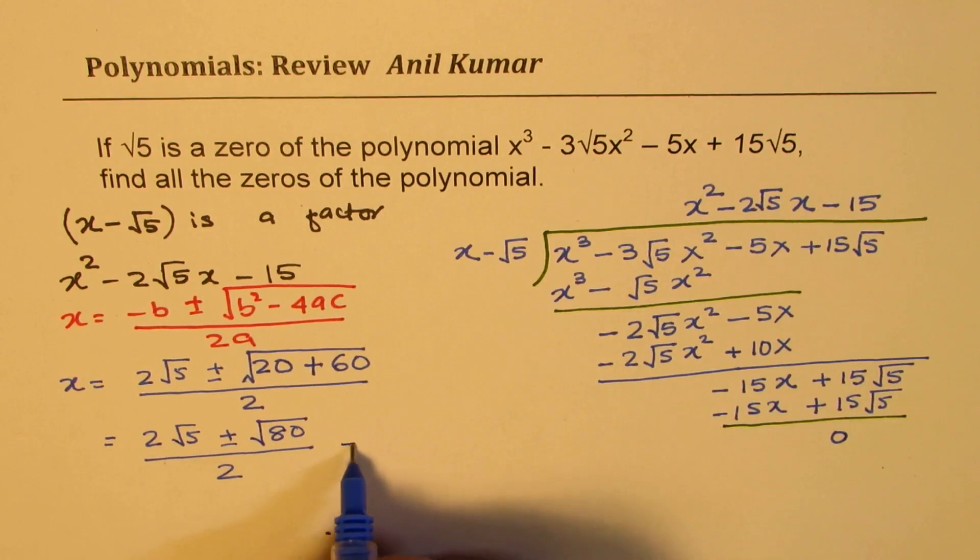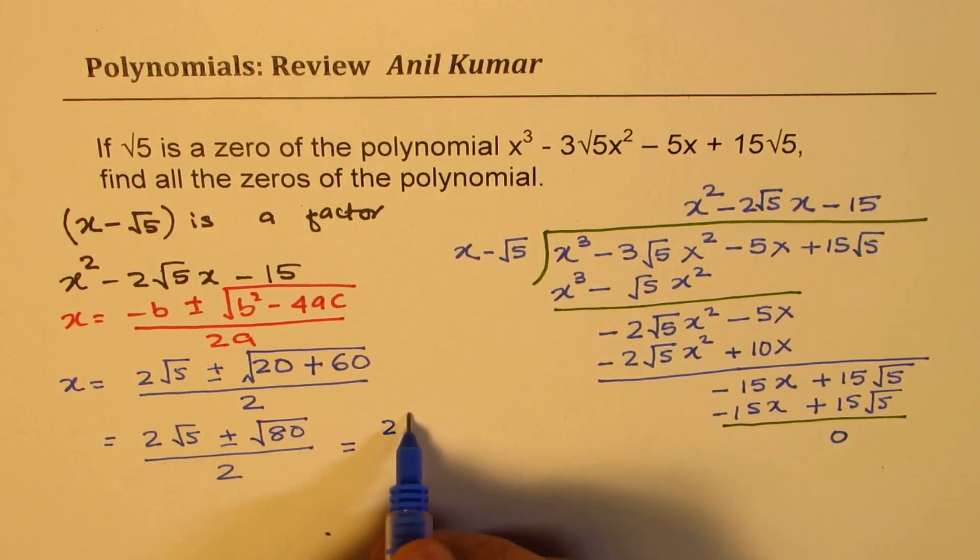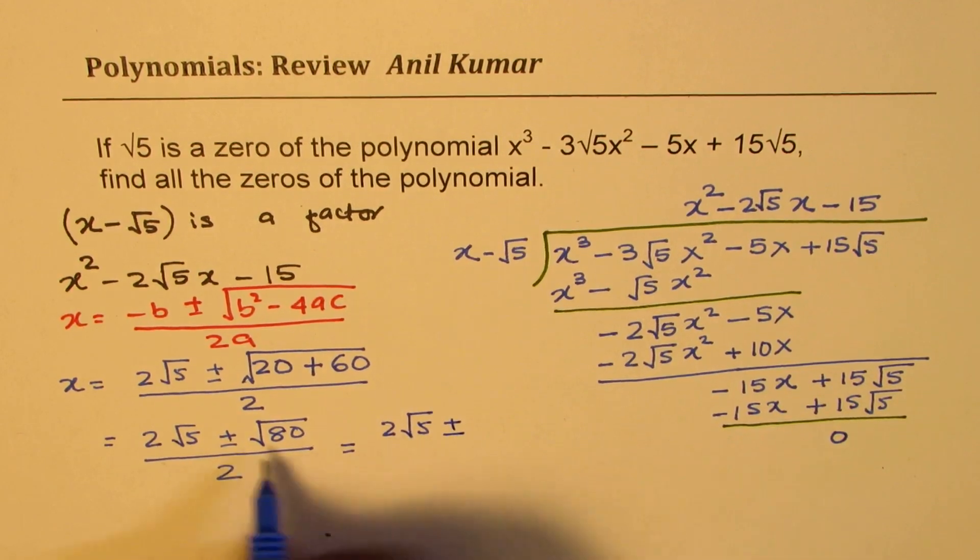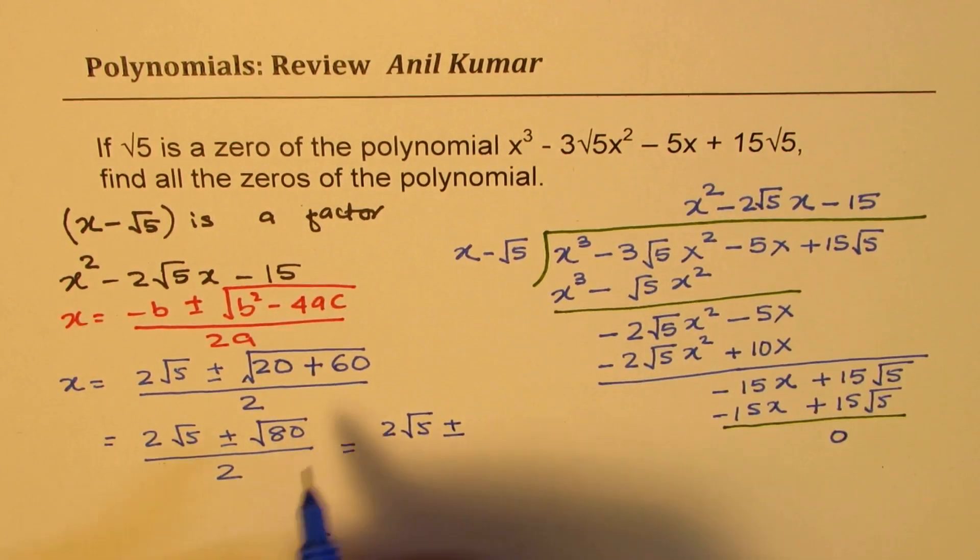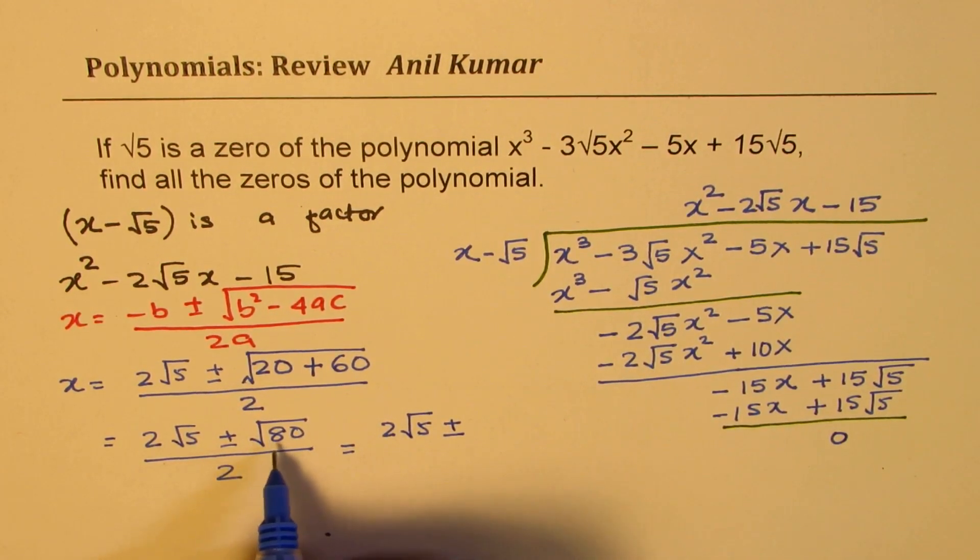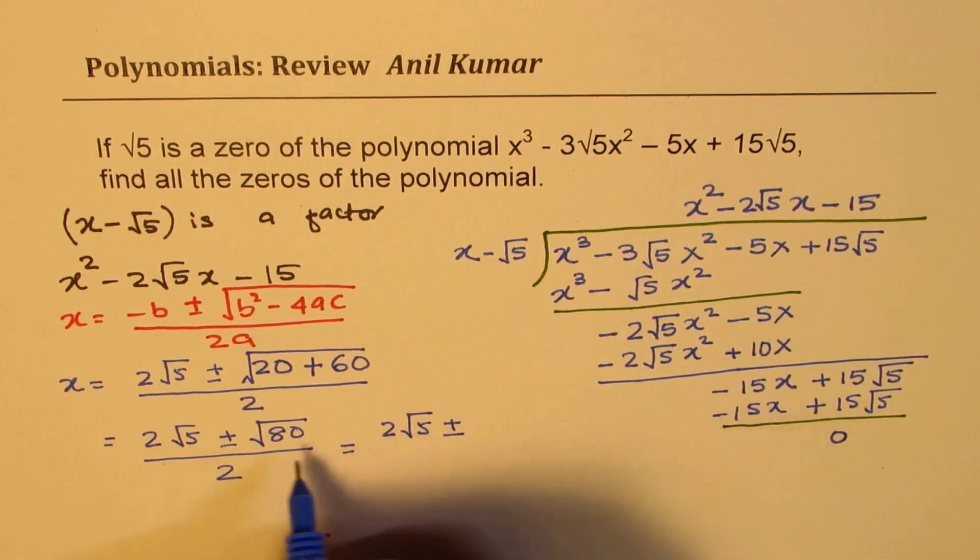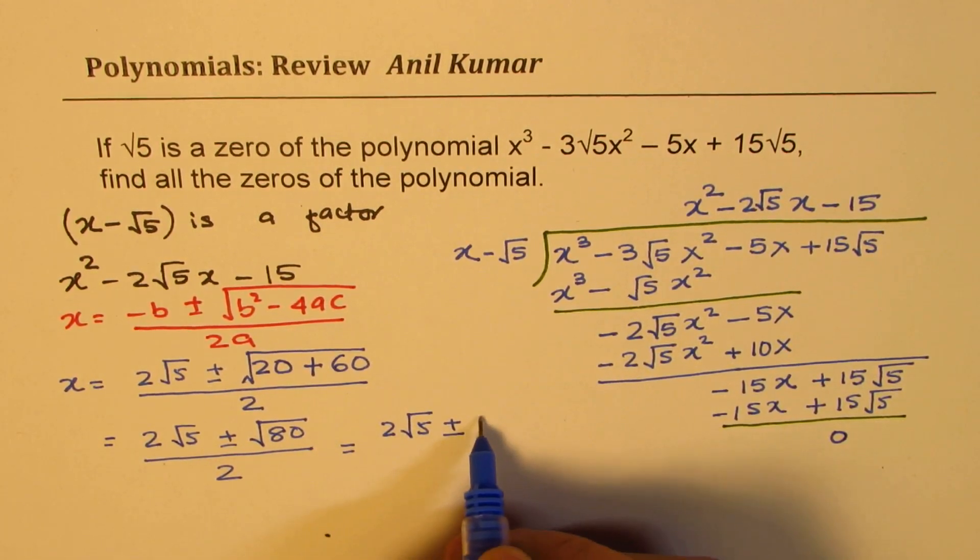Now, we could write this as 2 square root 5 plus minus, 80 is 4 times 5 times 16. So 4 could be taken out. So that gives you 4 square root 5.